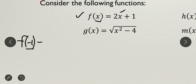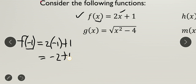Using the substitution property, we have 2 times (-1) plus 1, which equals -2 + 1, which equals -1. Negative 1 is the function value. Note that f(x) = 2x + 1 is continuous everywhere, meaning the argument can be any real number, negative or positive.